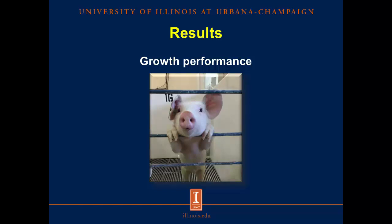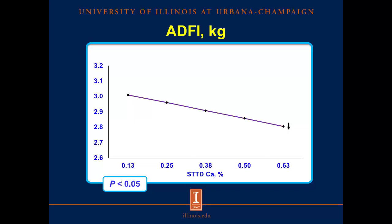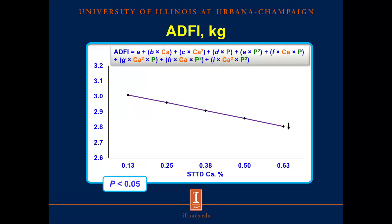Now let's move into the results and start with growth performance. This graph shows the average daily feed intake of pigs fed experimental diets. In the horizontal axis we have the five levels of digestible calcium, and in the vertical axis we have the predicted variable. As we increase the concentration of calcium, there is a reduction in feed intake regardless of the concentration of phosphorus. This is likely due to the fact that excess calcium may bind phosphorus, making phosphorus less available for pigs, and it was already demonstrated in previous research that phosphorus deficiency is detrimental to feed consumption of growing pigs. In this model, only the linear term of calcium was significant, indicating that only the amount of calcium in the diet explains the differences in average daily feed intake.